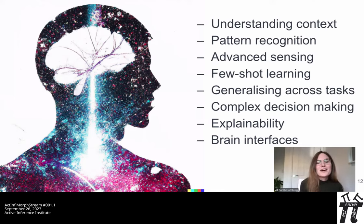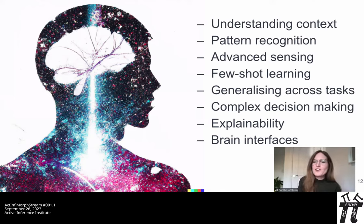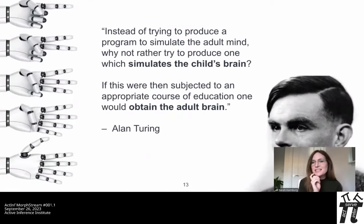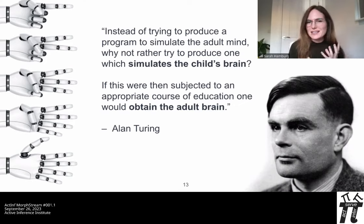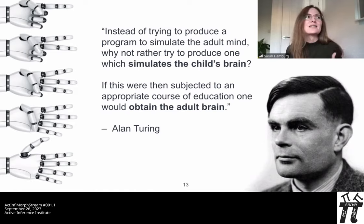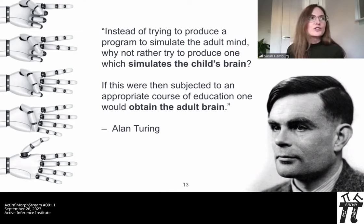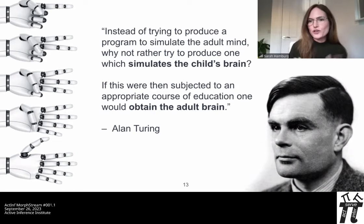We'll soon see the BCI field being catalyzed by neuromorphic systems, particularly for hybrids of hardware and wetware — potentially containing people's own brain cells, which you can grow just from a hair cell. A particular focus of our work is designing AI which learns in a similar way to a human — with an innate sense of curiosity, learning through interacting with the real world. Alan Turing said in the 1950s: instead of trying to produce a program to simulate the adult mind, why not try to produce one which simulates the child's brain?